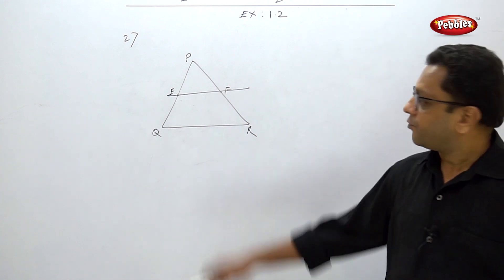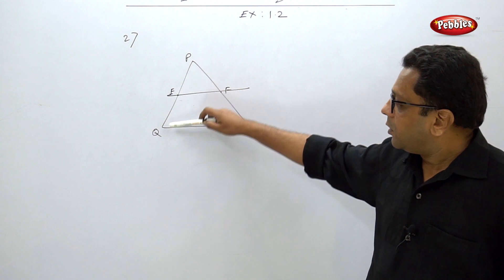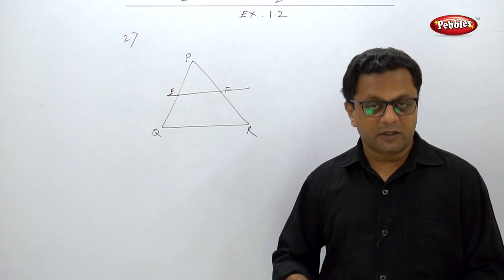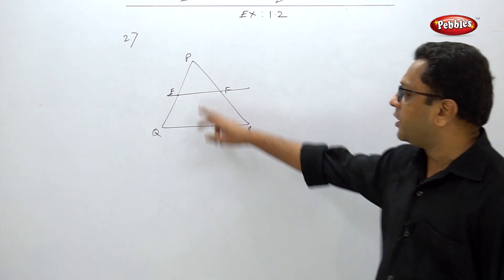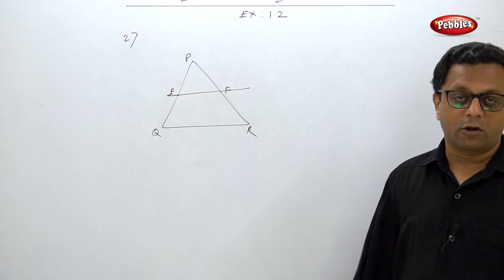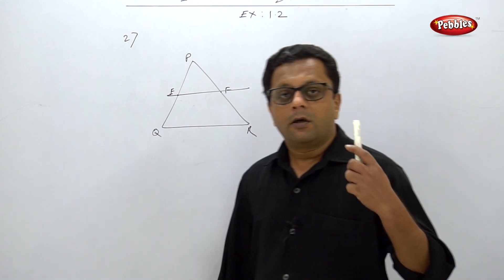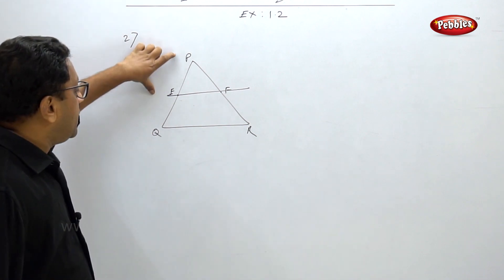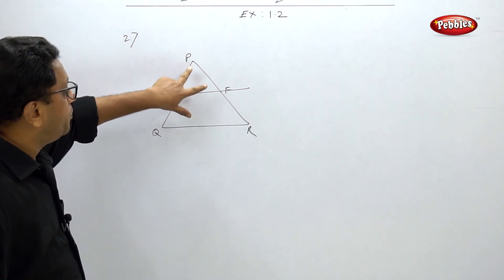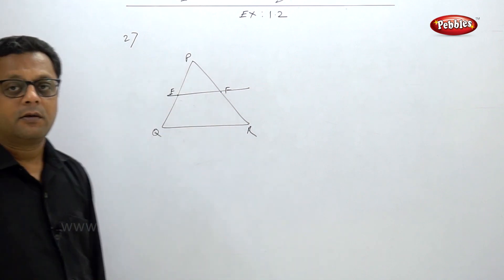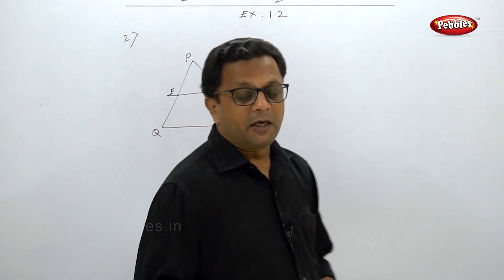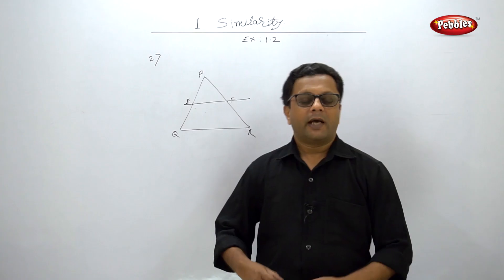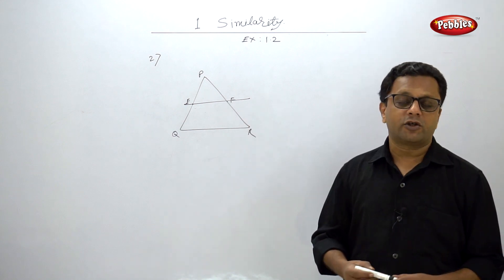PE, EQ, PF, and FR are given in centimeters. You have to decide whether EF is parallel to QR. Using the converse of BPT: if PE/EQ equals PF/FR, then by the converse of BPT, EF is parallel to QR. The example is very simple — just do the calculations properly.